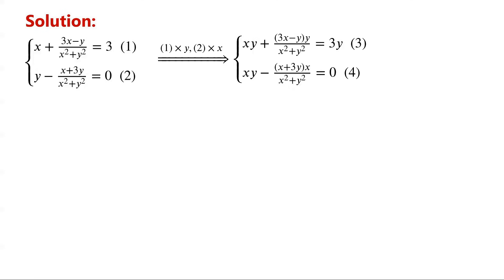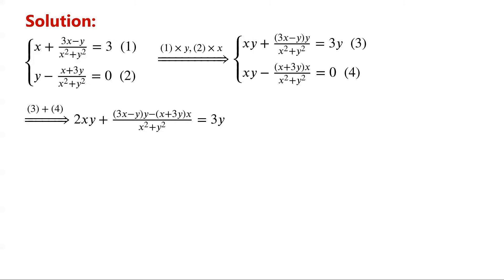We label them as equations 3 and 4, respectively. Adding equation 3 to equation 4, we have: 2xy plus (3x minus y)·y minus (x plus 3y)·x, all over x squared plus y squared, equals 3y.